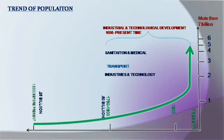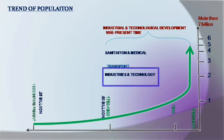Transportation improved significantly and industrial development brought a lot of training and economic progress, all contributing to rapid population growth.